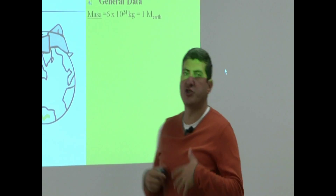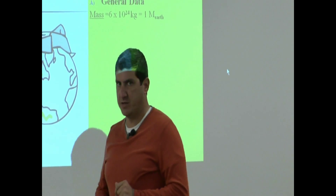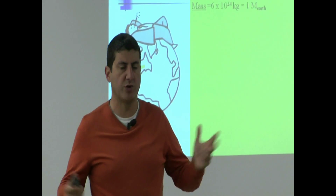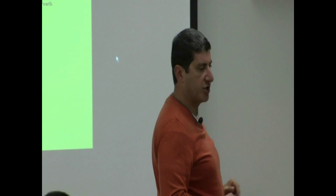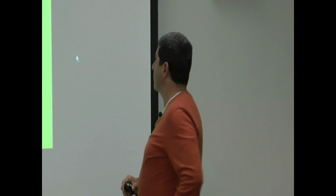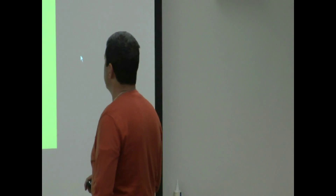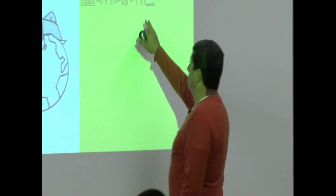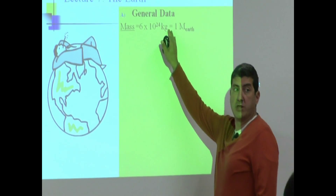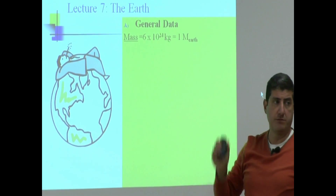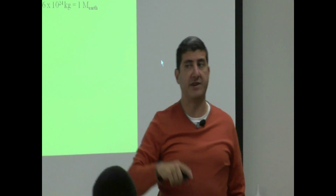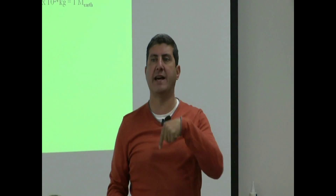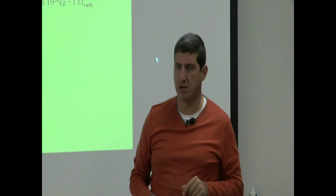Let's talk about some general data — the mass of the Earth. That is one of the primary properties of an object. The mass of the Earth is roughly 6 times 10 to the 24th kilograms. We can call this 1M_Earth, and when reporting the mass of other planets, we can compare that to the Earth.